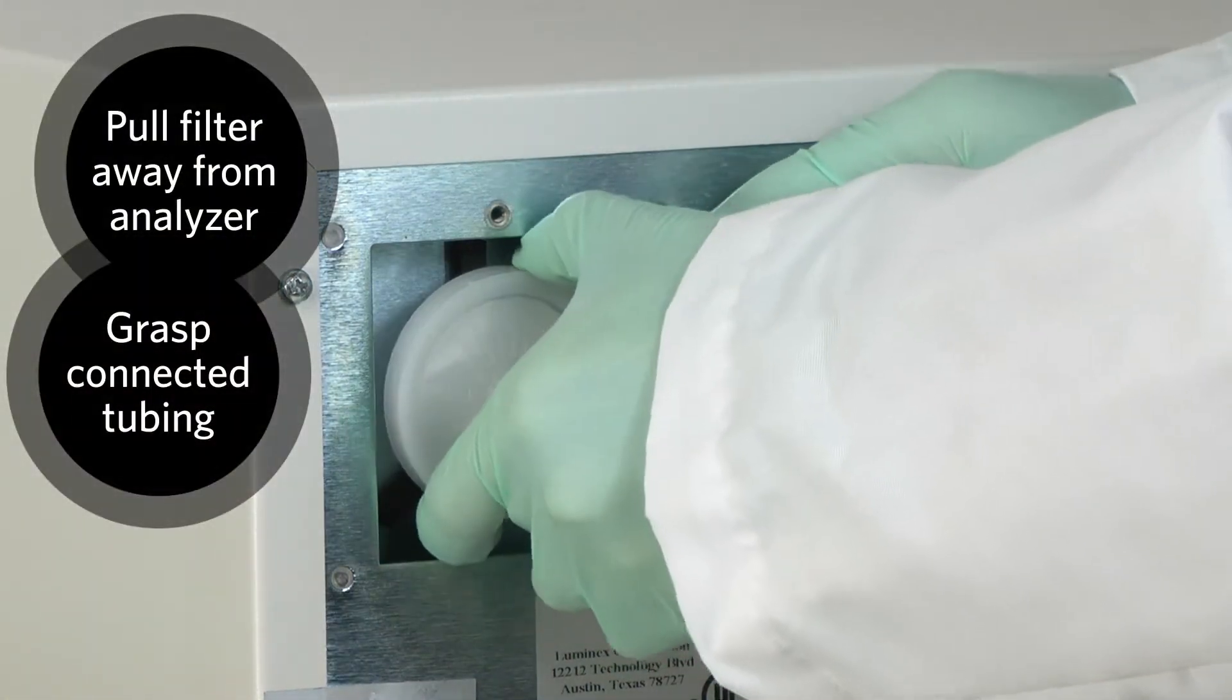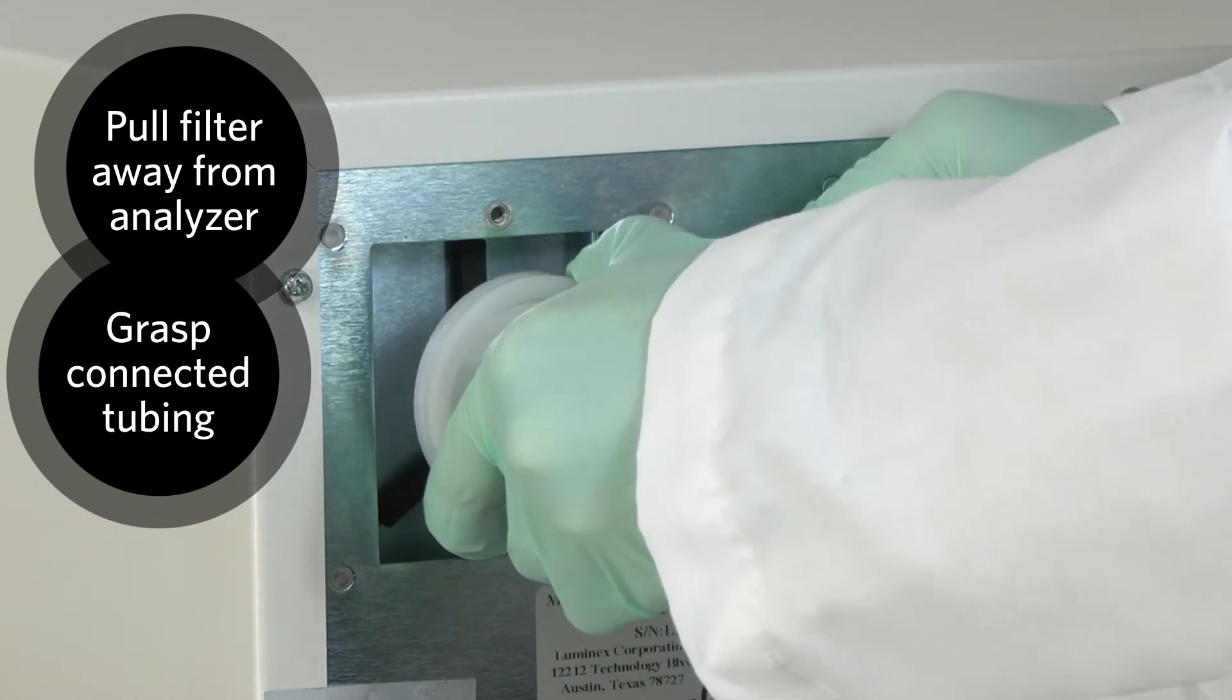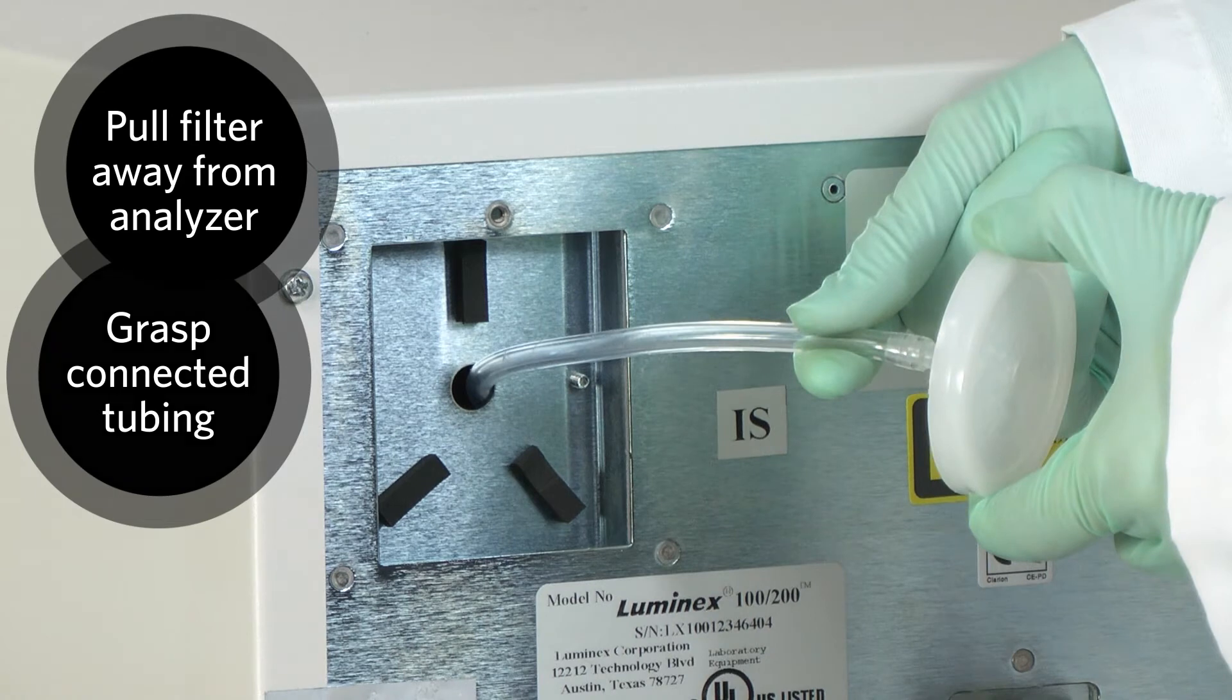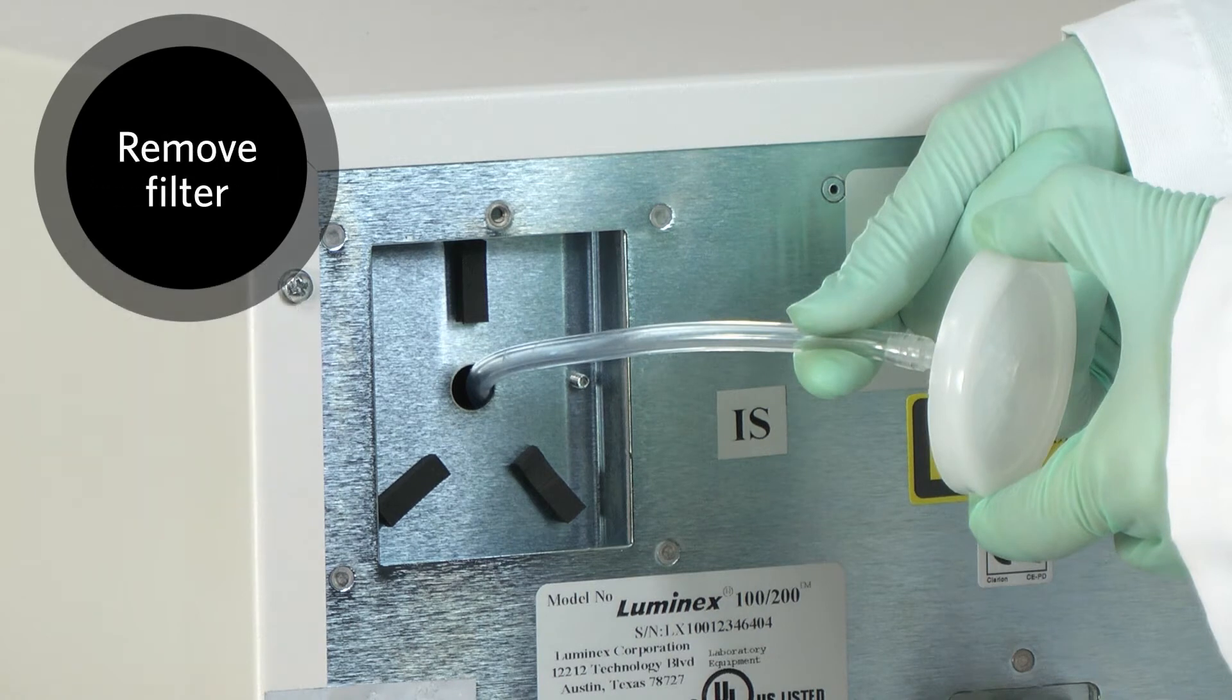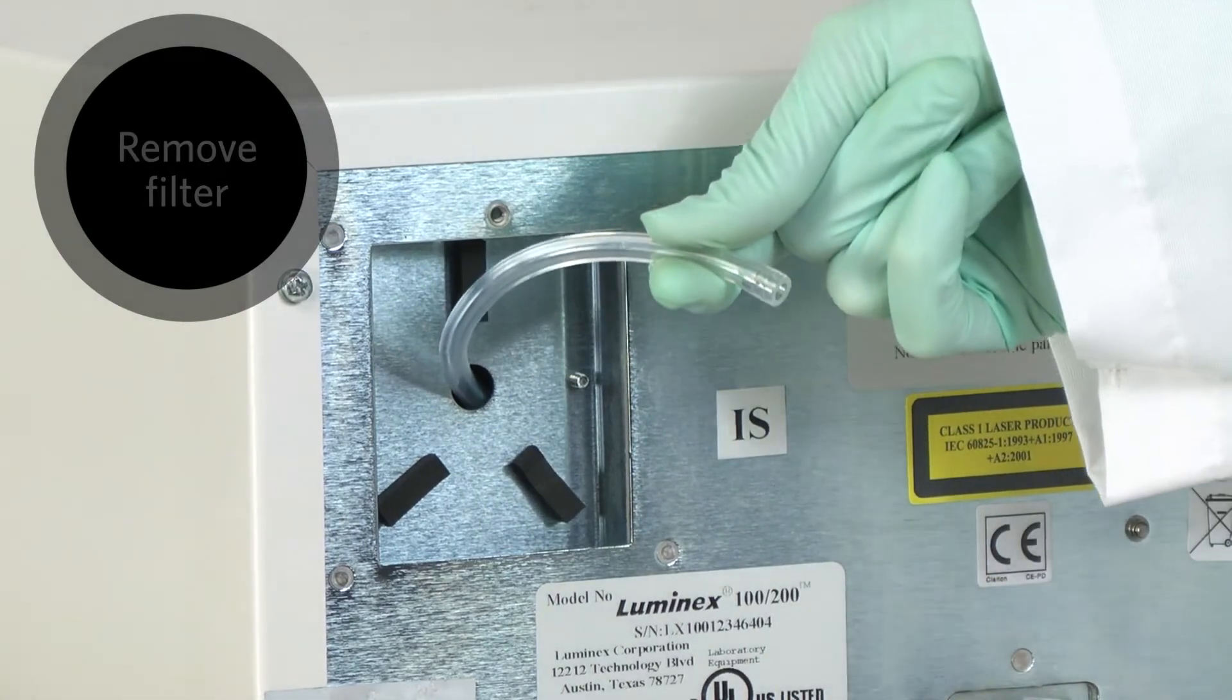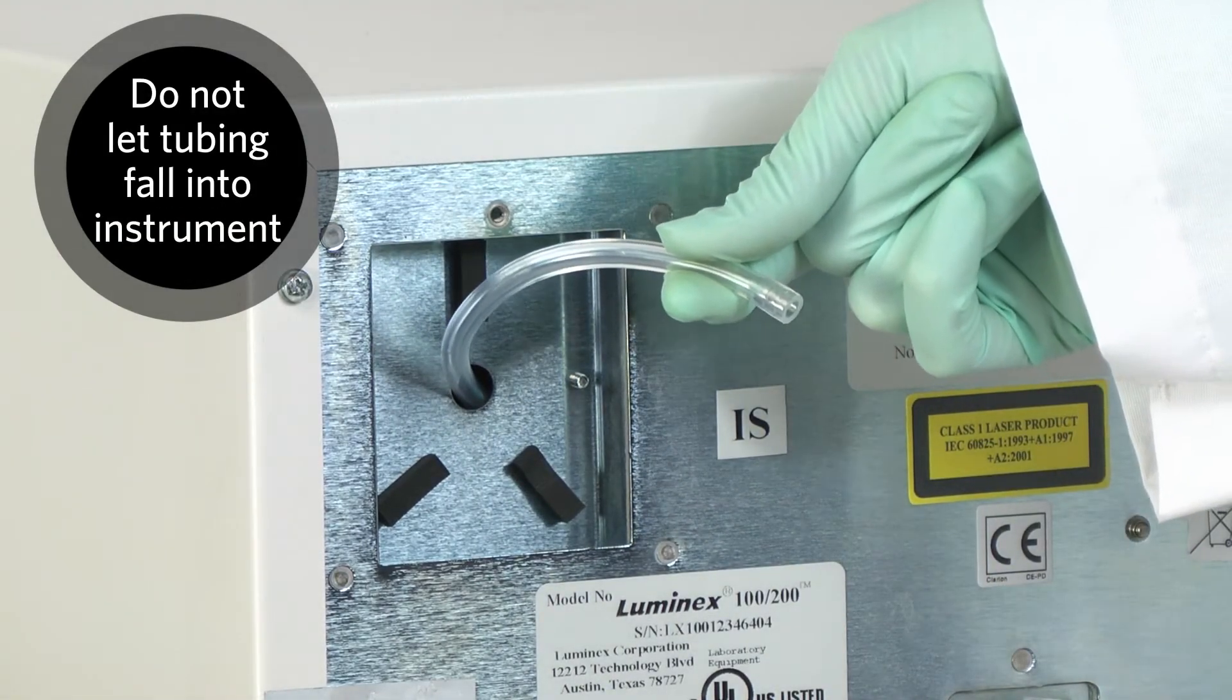Pull the filter away from the analyzer and grasp the connected tubing. Pull the filter 3 to 4 inches from the unit. Remove the filter with one hand and hold the tubing with the other hand. Be careful not to let the tubing fall into the instrument.